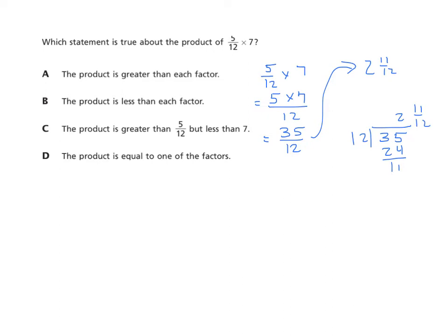Well, let's see which is true. The product is greater than each factor. Well, 2 and 11 twelfths is not greater than 7. So that choice is out. The product is less than each factor. Well, if my product is 2 and 11 twelfths, is that less than my smallest factor? Well, it's less than 7, but it's not less than 5 twelfths. So that choice is eliminated. The product is greater than 5 twelfths, but less than 7. Well, that looks promising. 2 and 11 twelfths is greater than 5 twelfths. And it's less than 7. So that's true. Well, we're going to look at that last one. The product is equal to one of the factors. No, 2 and 11 twelfths is not equal to 5 twelfths or 7. Our correct answer is C.